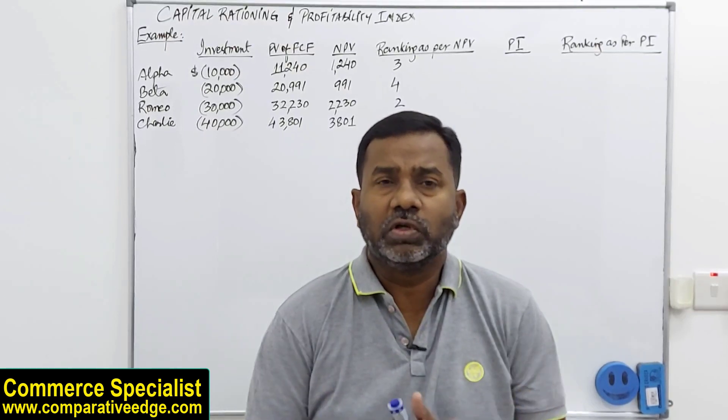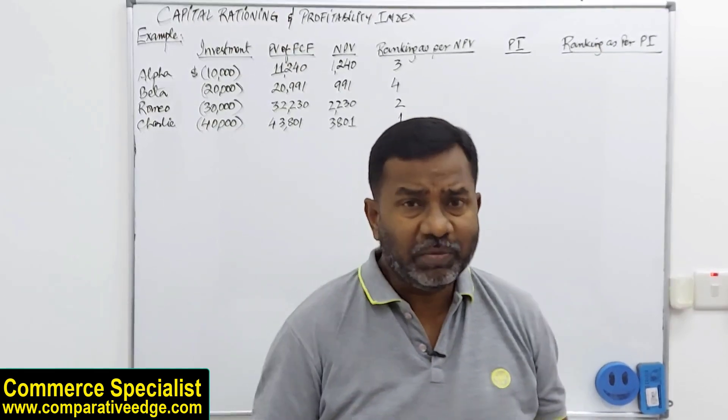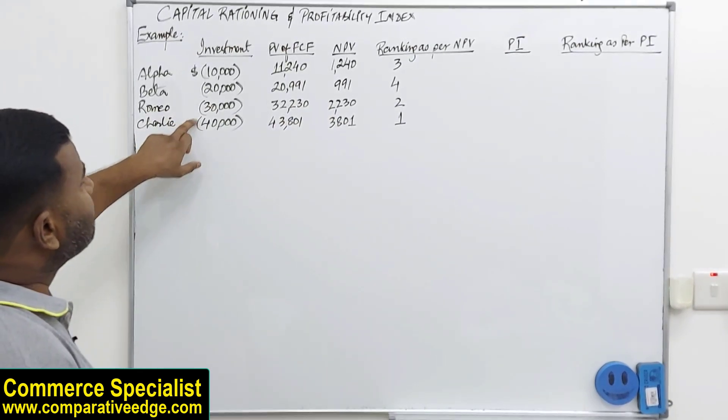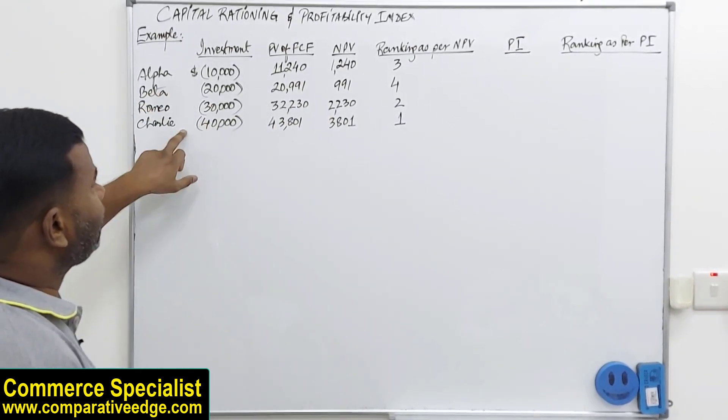For a while, if you assume that there are no capital constraints, that means we can invest in all of them. And if we do, how much money do we need? 100,000 is required.